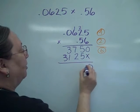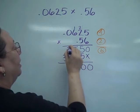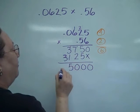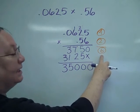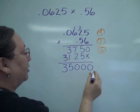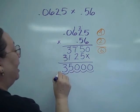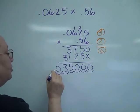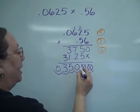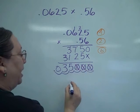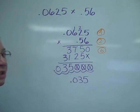Now adding them up, I've got zero, ten carry one, ten carry one, five don't carry, and three. Remembering I have six numbers behind the decimals, so there's one, two, three, four, five, and yes, you must add a zero to the front. And again, remembering any zero on the end I can take off. So my answer is 35 thousandths.